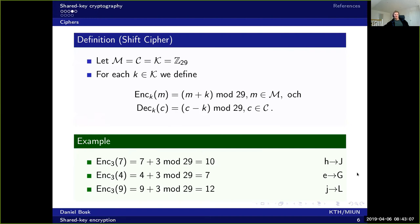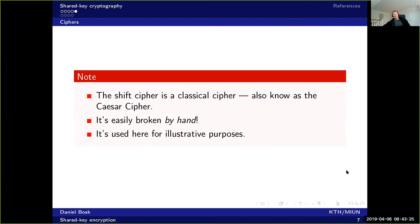To send a word we need to split it up into several messages. To send 'Hej' we actually need to consider three messages in a row. The shift cipher is a classical cipher, also known as the Caesar cipher, because Caesar supposedly used it, and it is easily broken by hand. We include it here just for illustrative purposes.